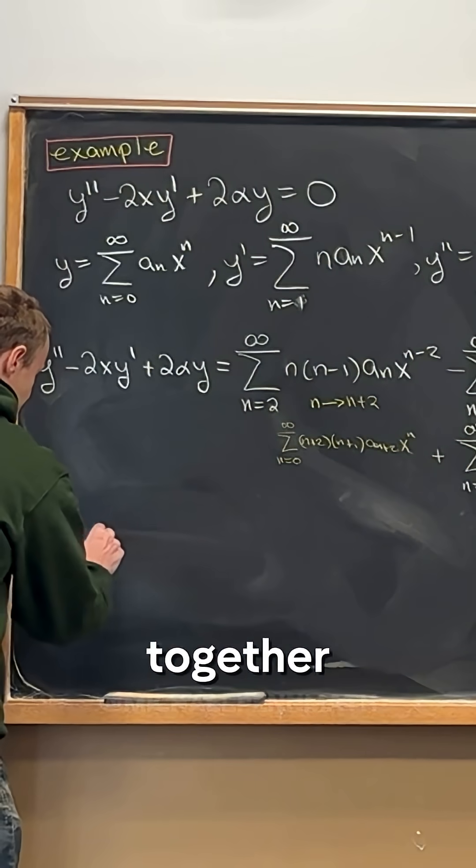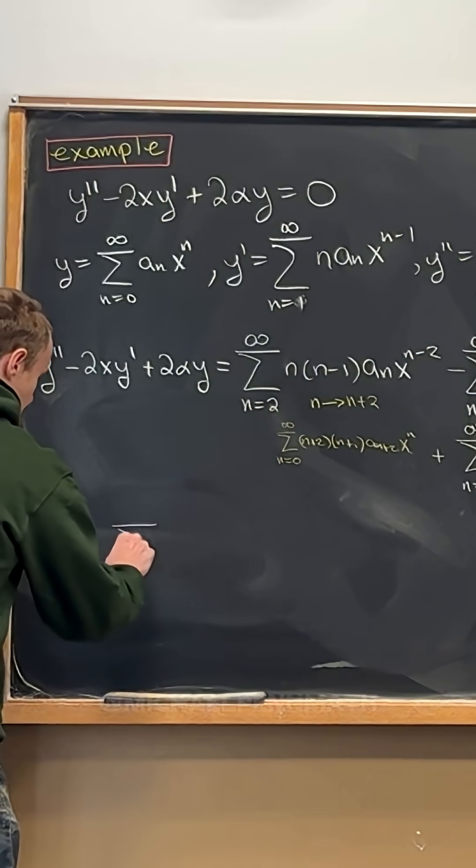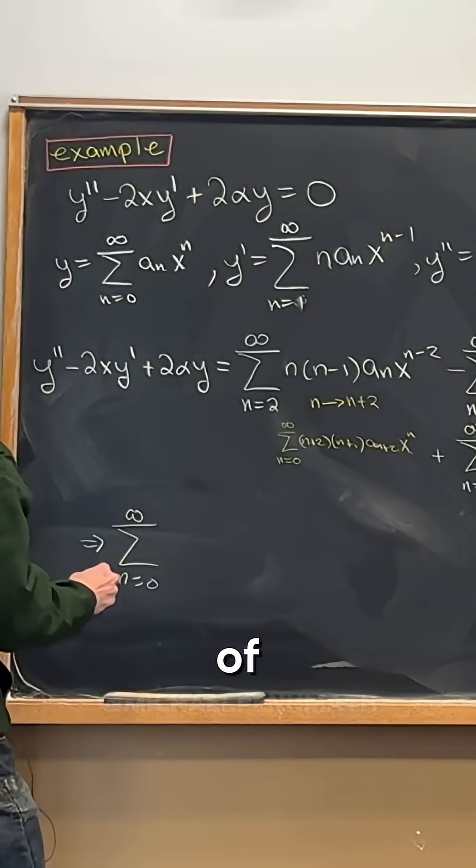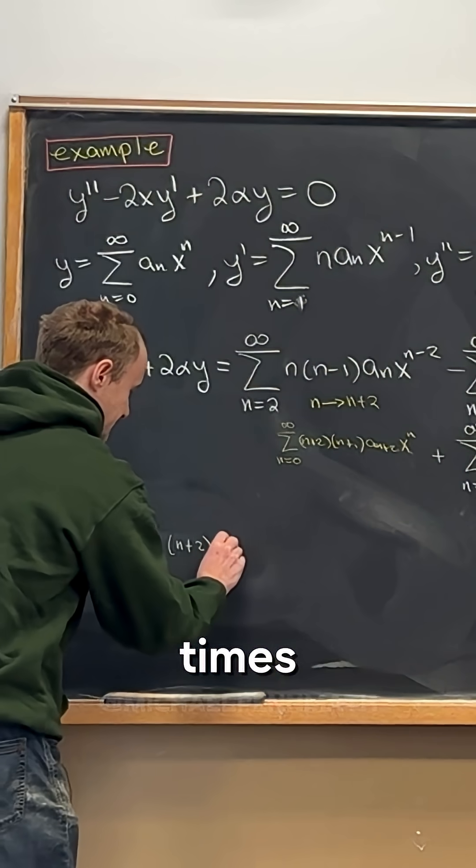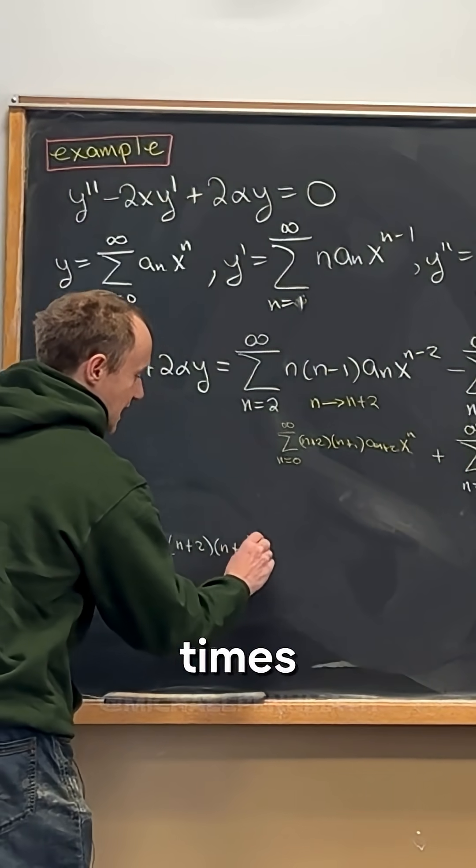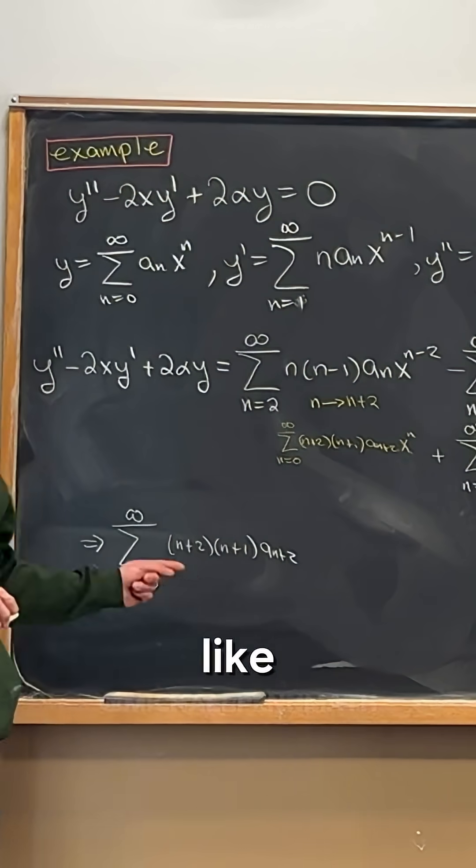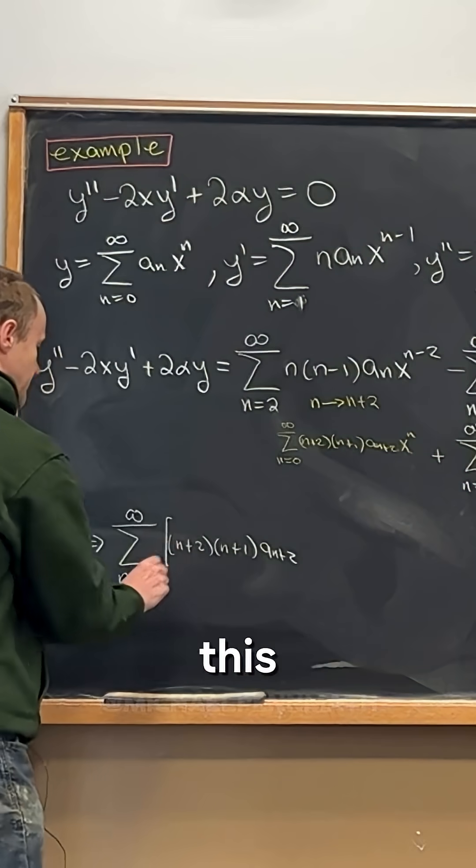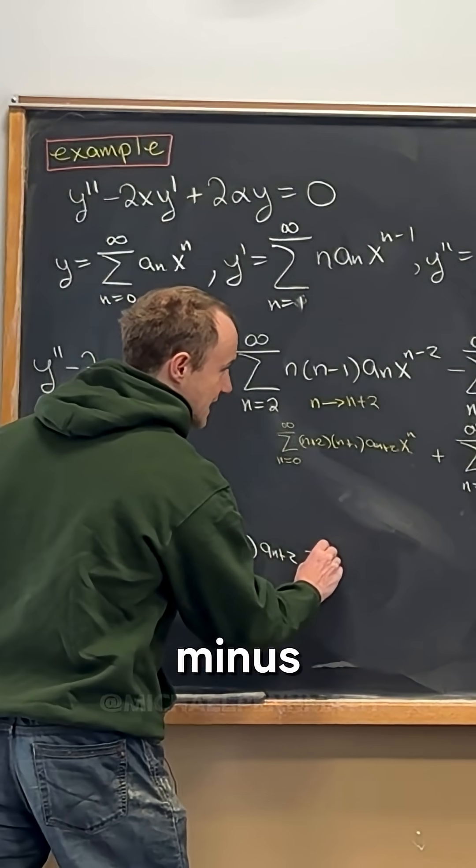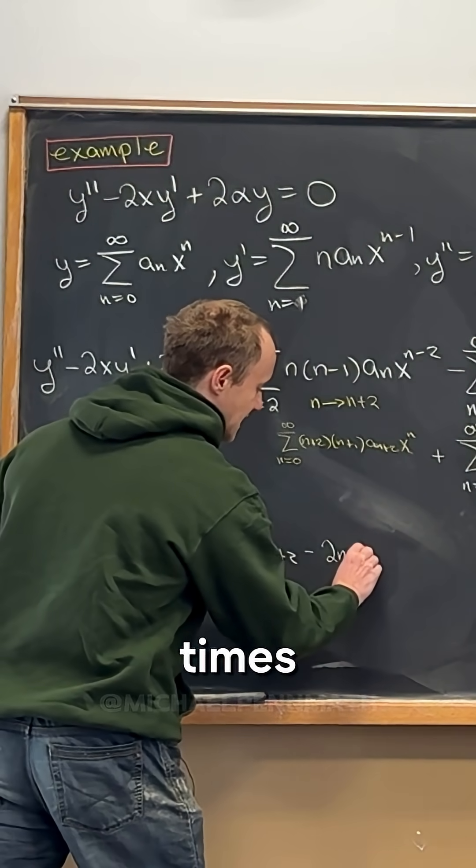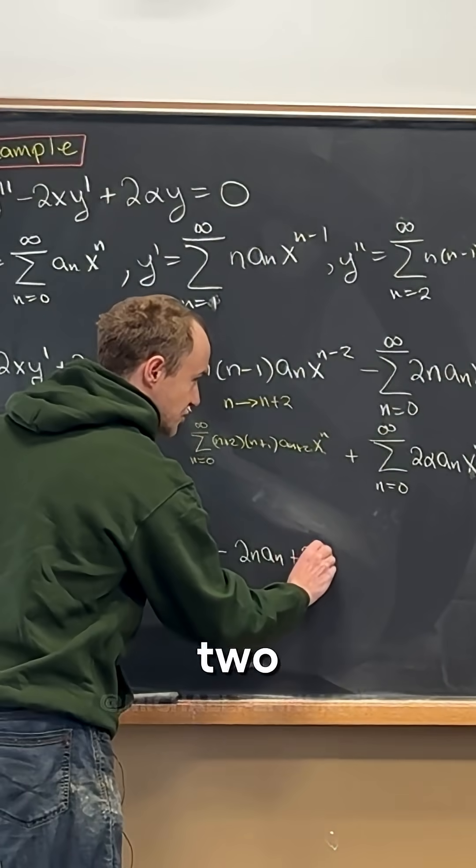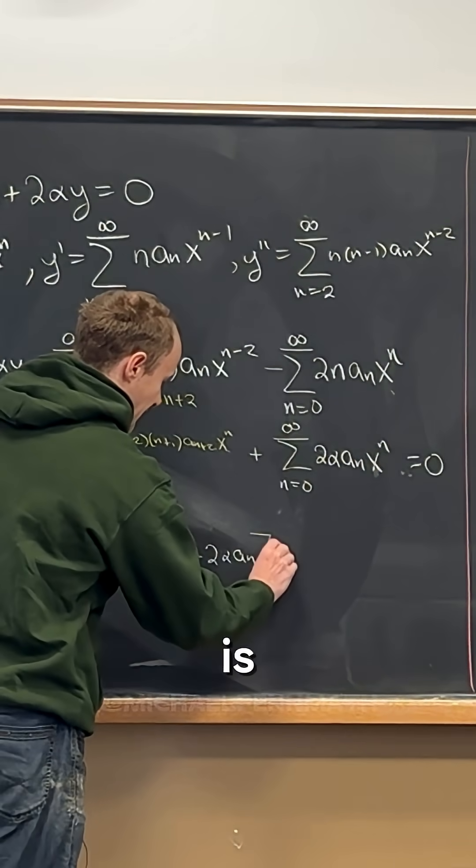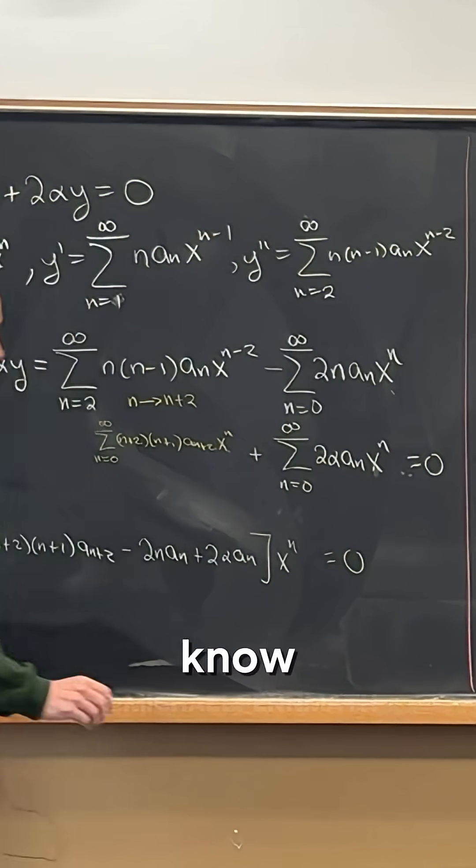And now let's smush all these together into a single sum. So we've got the sum as n goes from 0 up to infinity of, so we've got n plus 2 times n plus 1 times a n plus 2. And then I'm going to write the x to the n at the very end, and just have parentheses around this whole thing. And then next I'll have minus 2 times n times a n from this term and then plus 2 times alpha times a n from this term. And then finally all of that is multiplied into x to the n and we know that that's equal to 0.